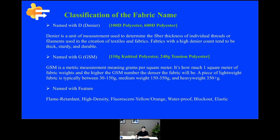The last classification of fabric names is named with features. Some fabric names contain the most distinctive features of the fabric, such as flame retardant, high-density, fluorescent yellow, waterproof, blackout, elasticity, and so on. You can also judge from these descriptive words. Regarding features, a necessary reminder is that some functional features are a relative concept. For example, UV protected is one of the features for 600 Denier pure polyester, and it's not referring to the fabric never fading — but that the color on this fabric will last longer than other standard fabrics.